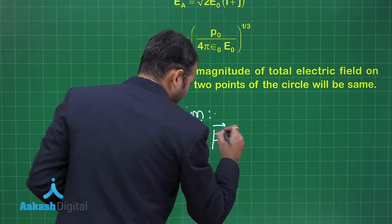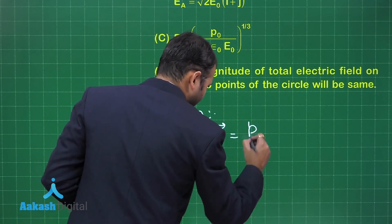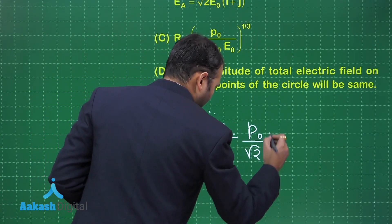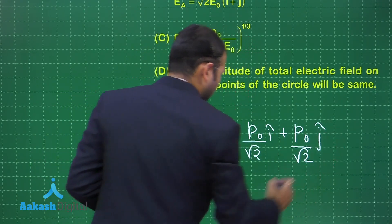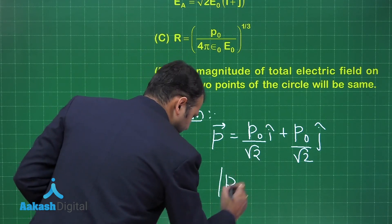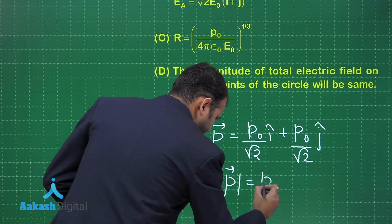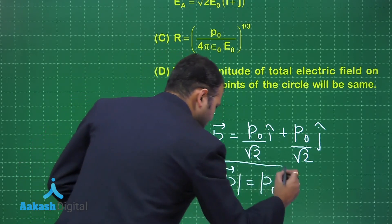So P is given to be P₀/√2 î + P₀/√2 ĵ. When you find the magnitude P, you will get as P₀.